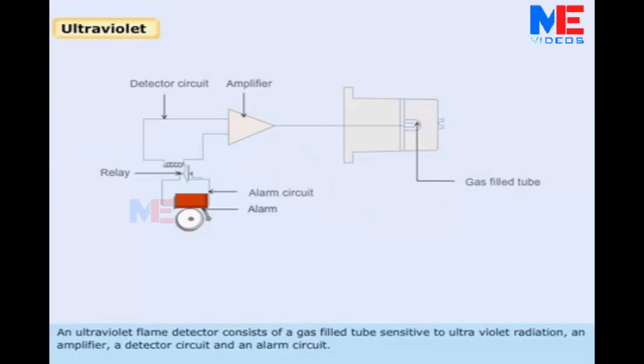An ultraviolet flame detector consists of a gas-filled tube sensitive to ultraviolet radiation, an amplifier, a detector circuit, and an alarm circuit.